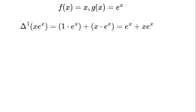Delta to the power of 1 times (x times e to the power of x) equals 1 times e to the power of x plus x times e to the power of x, which equals e to the power of x plus x times e to the power of x. Check it: the derivative of x times e to the power of x equals x times e to the power of x plus e to the power of x. It matches perfectly. Our framework is off to a great start.